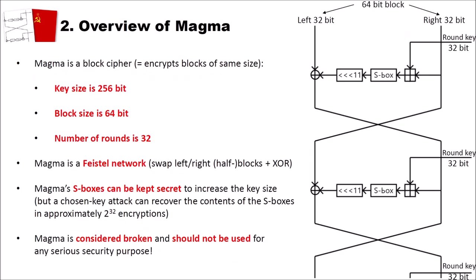Let's have a look at an overview of the Magma cipher. Magma is a block cipher, meaning it encrypts blocks of the same size. It has a key size of 256 bits, a block size of 64 bits, and a total of 32 rounds. Like DES, Magma is a Feistel network — meaning you have a swap of left and right half blocks plus XOR. Magma's S-boxes can also be kept secret besides the key to increase effective security, but a chosen-key attack can recover the S-box contents in approximately 2^32 encryptions. Magma is considered broken and should never be used for any serious security purpose.